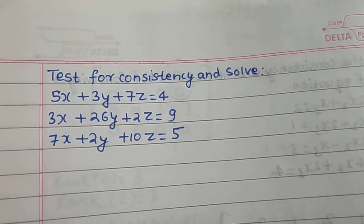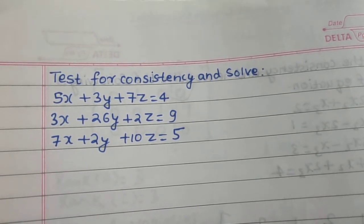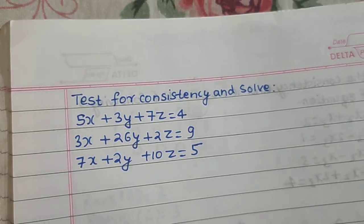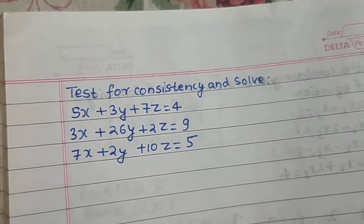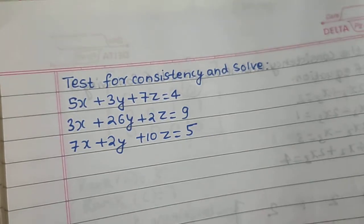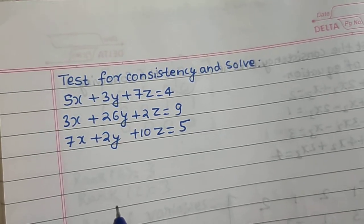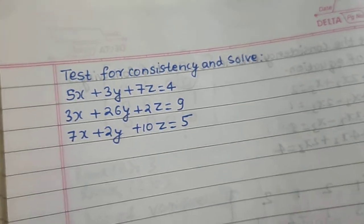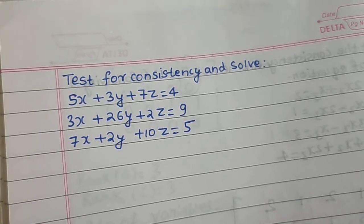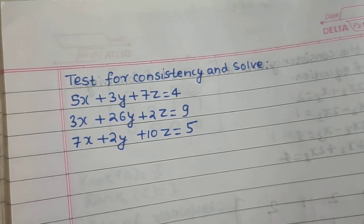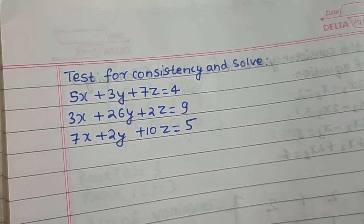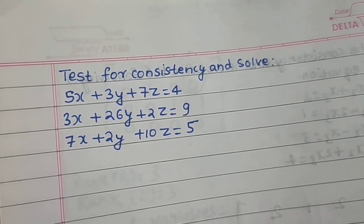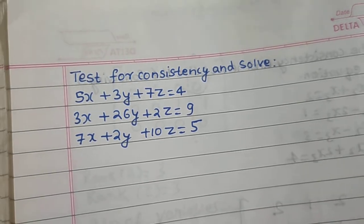We need to check for consistency and then solve. There can be two cases only: either it will be consistent or non-consistent. Non-consistent means no solution. Consistent means either a unique solution or infinitely many solutions. Unique solution means we find the solution easily, and in case of infinite solutions we will find a general solution, because we cannot write all the infinite number of solutions.